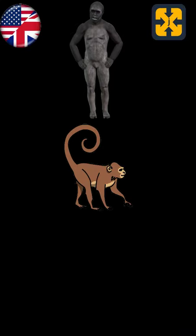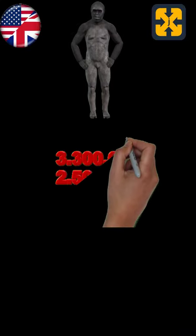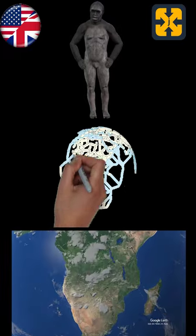Hello, I am Australopithecus africanus, and my name means southern African ape. I am between 3.3 and 2.5 million years old. I was discovered in South Africa.